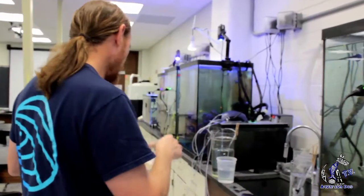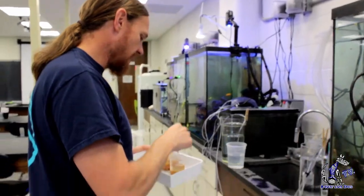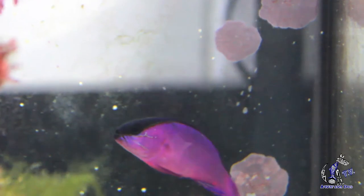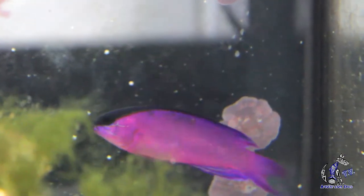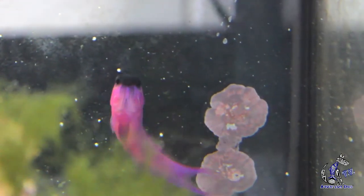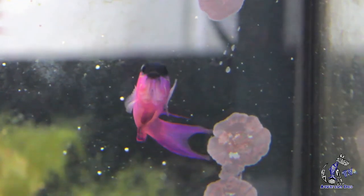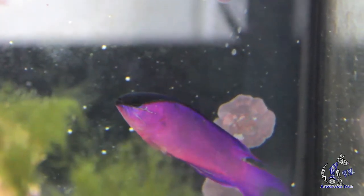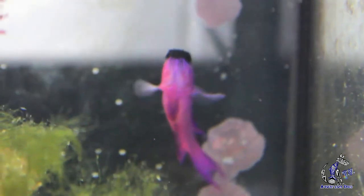These column tanks I use for the gramas. I've got in here Gramma melacara, the black cat basslet. This is new broodstock. They haven't started spawning yet, but hopefully soon. I've got four of them in here. They're getting along, so I think they should be compatible, and I think they should eventually produce some babies for me.